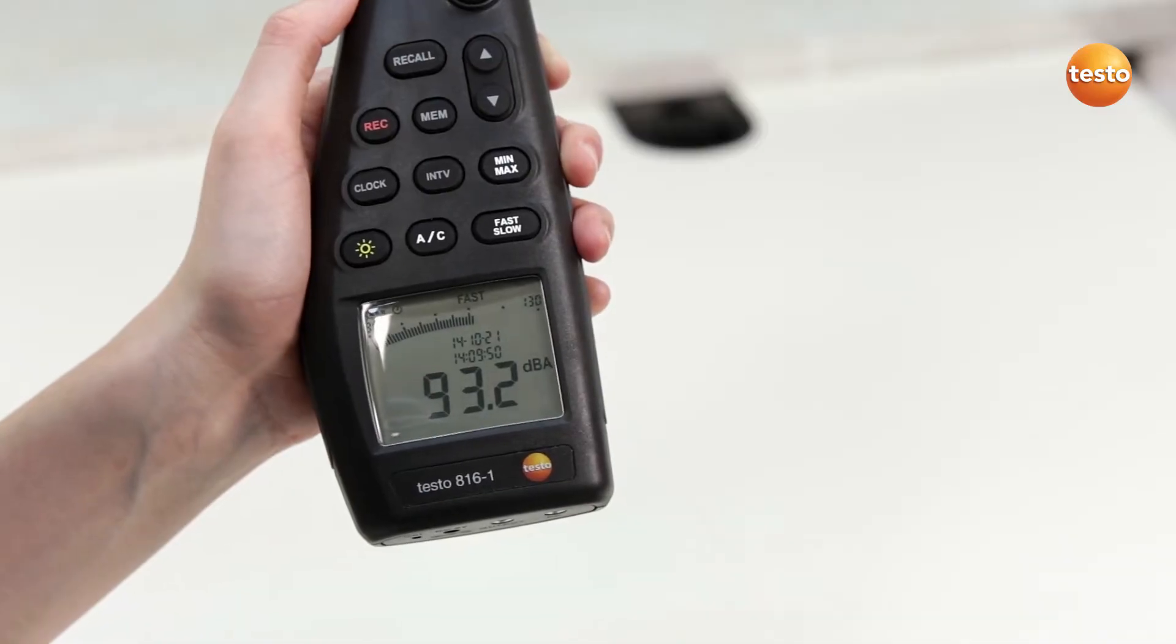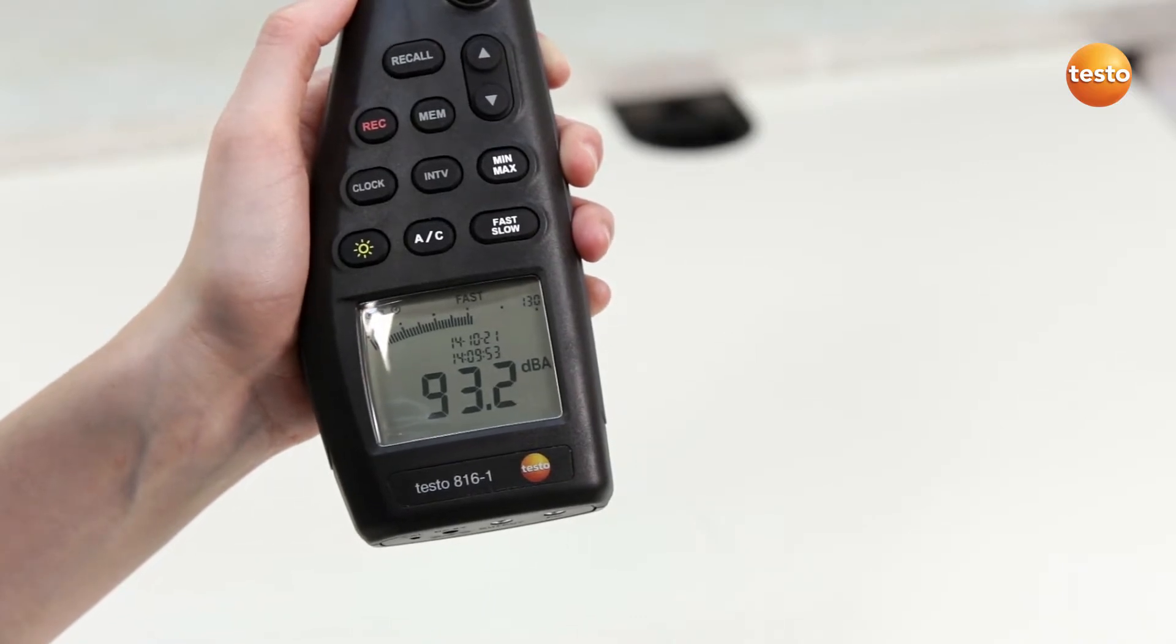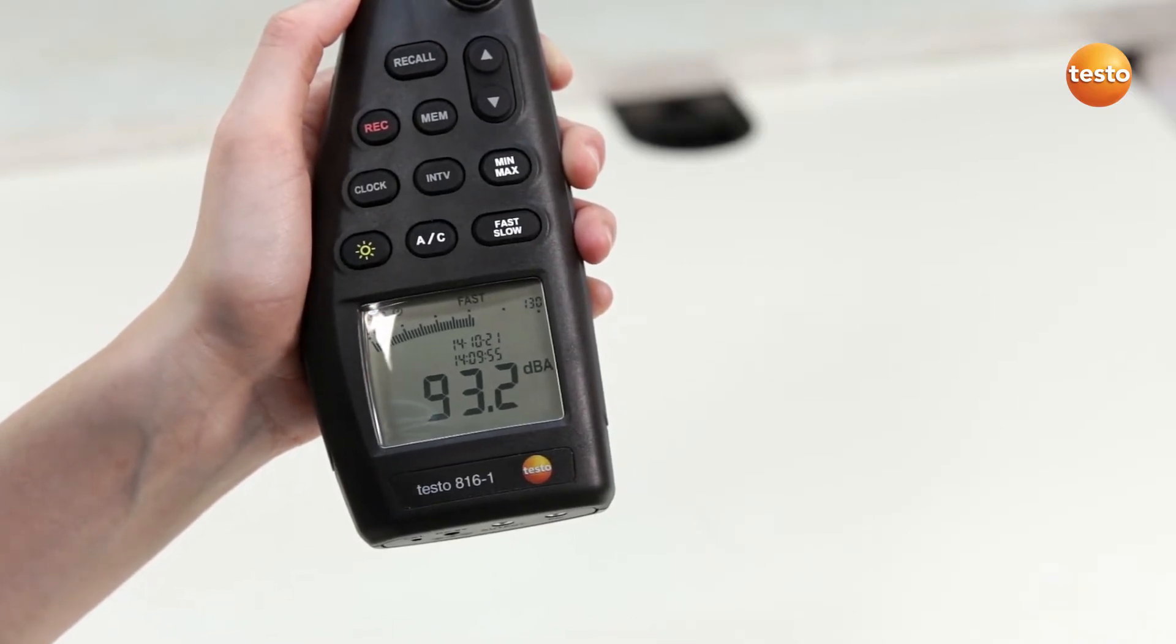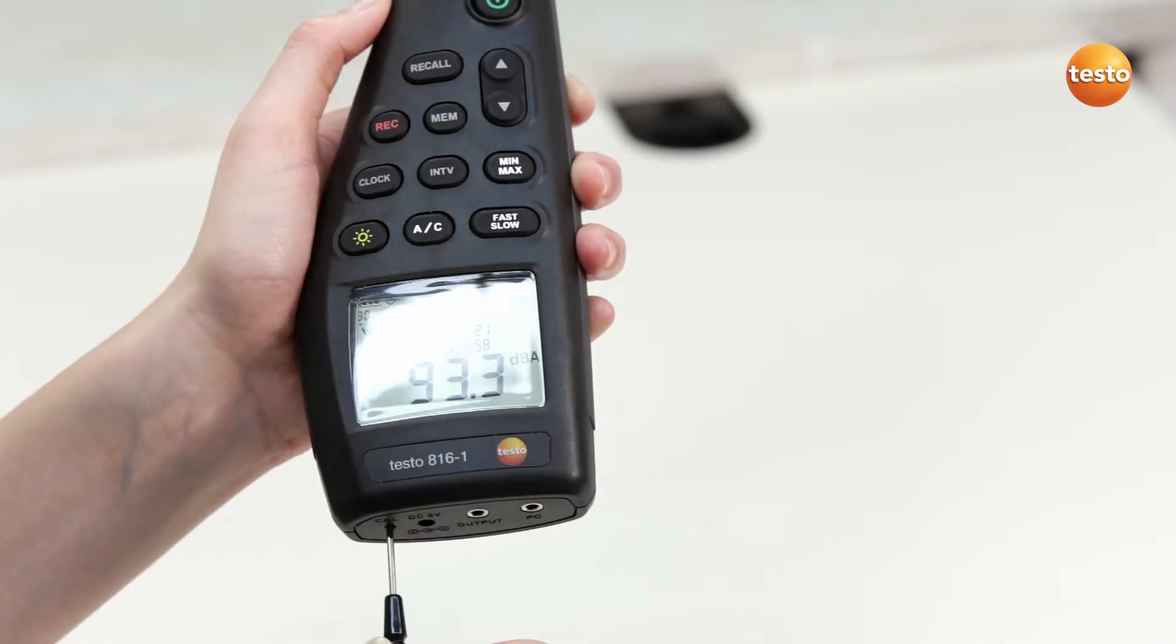This value is then compared with the reading in the display. If the Testo 816-1 doesn't display exactly 94 dB, readjust with the screwdriver.